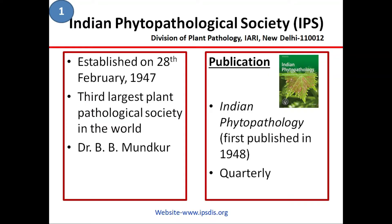The first and foremost comes Indian Phytopathological Society. The society is based in Division of Plant Pathology, IARI, New Delhi. It was established in the year 1947, that is well before India's independence. This is the first plant pathological society in India.